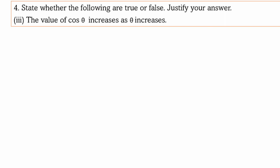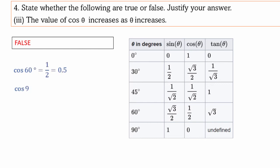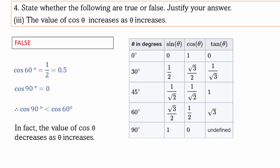State whether the following are true or false. The value of cosθ increases as θ increases. Looking at the table, as θ goes from 0 to 90, cosθ goes from 1 down to 0 — it decreases. For example, cos60 equals half and cos90 equals 0, so cos90 is less than cos60. Therefore, cosθ decreases as θ increases from 0 to 90. This statement is false.